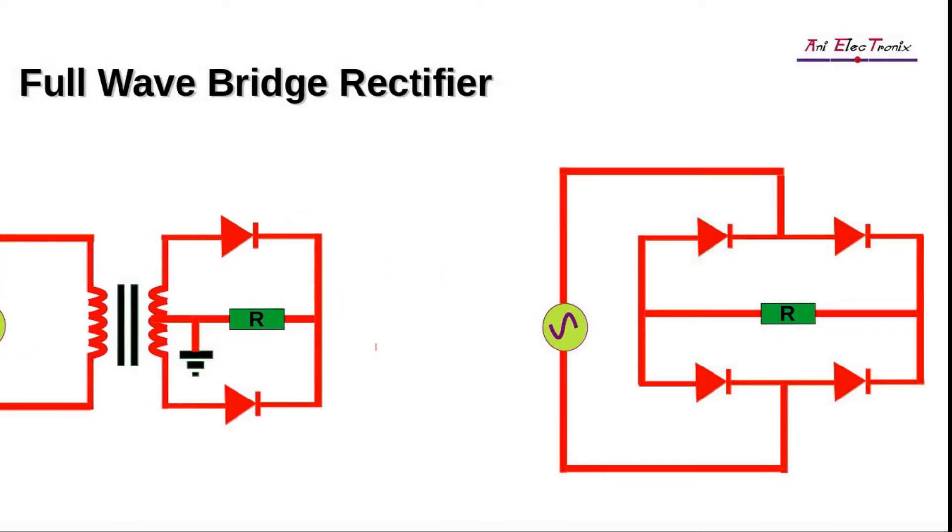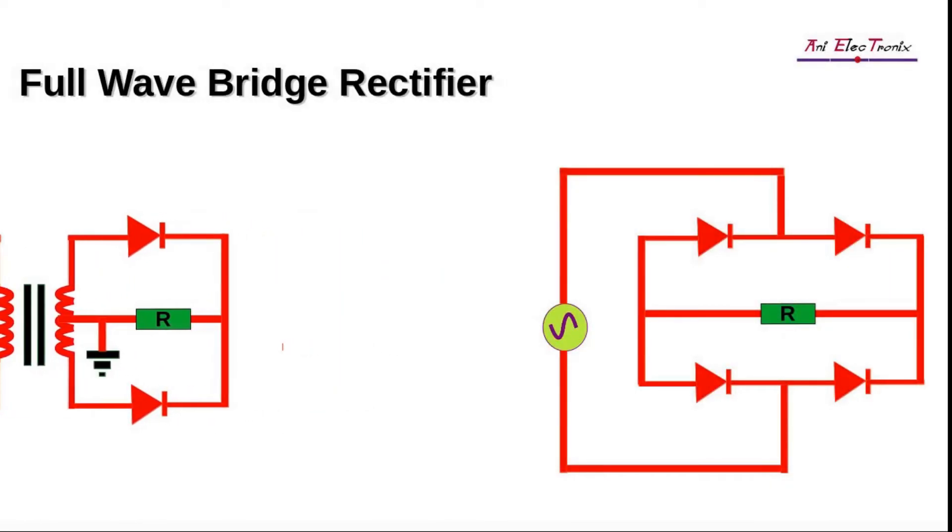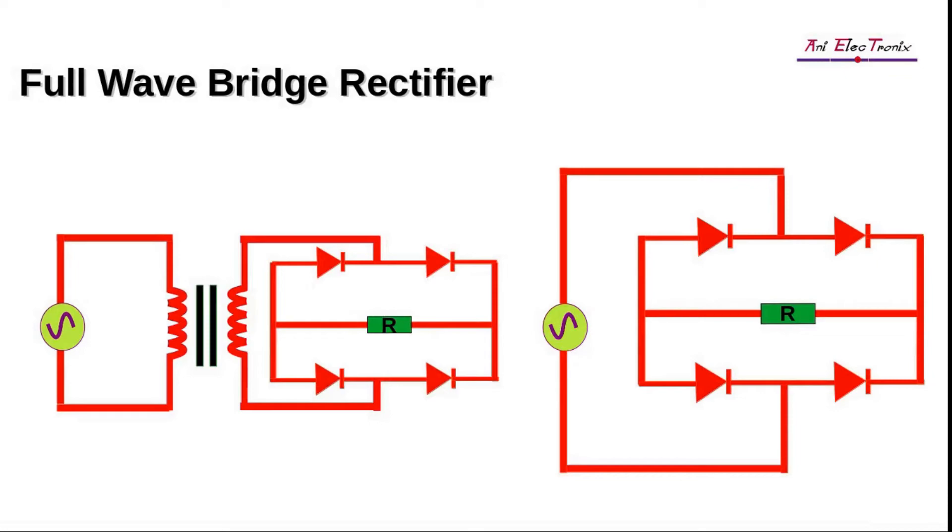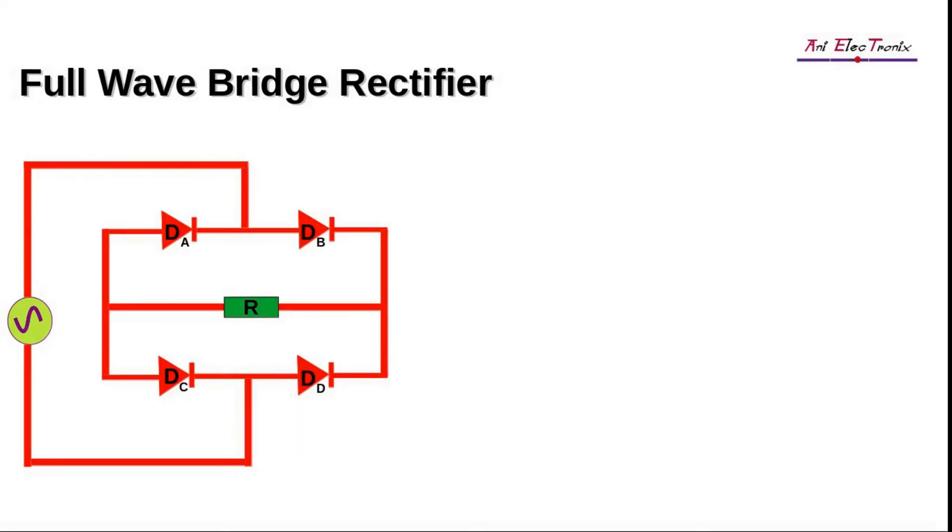Full-wave bridge rectifiers can address the problem as it improves the transformer utilization factor. This means that even if the transformer is not center tapped, the rectifier will operate. A full-wave bridge rectifier consists of four diodes.